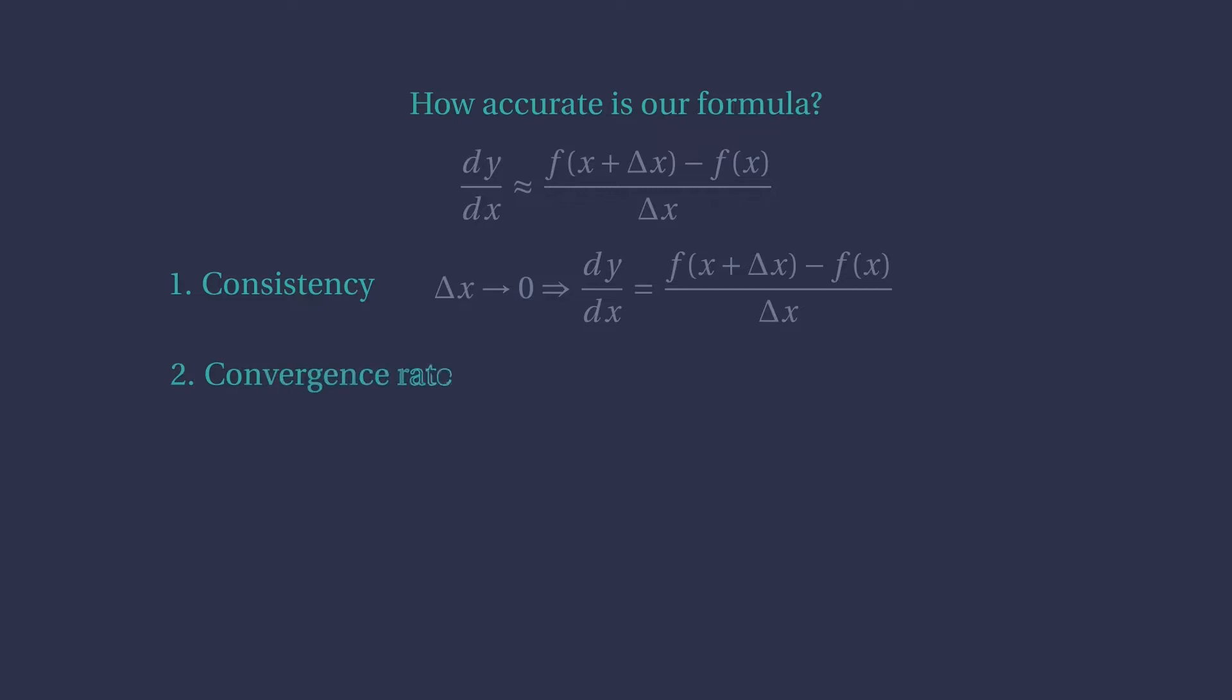Second, yes, the smaller the delta x, the better the approximation. But how much better? Say we decrease the delta x by 10. What improvements in our approximation can we expect? To communicate this information, we use the big O notation.